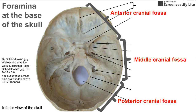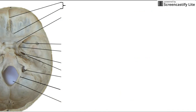Now within each of these cranial fossae, we have thinner non-bolded arrows leading to all the foramina, and we're going to be talking about the foramina at the base of the skull and the major structures that go through them. Starting at the top, same image — the inferior view of the base of the skull — and we're going to be talking about all those foramina.